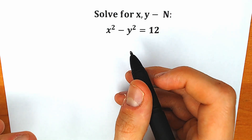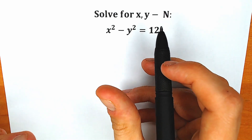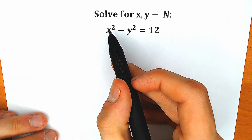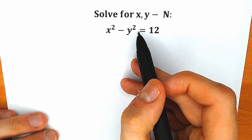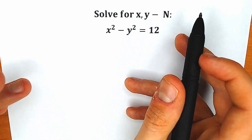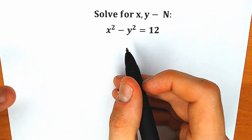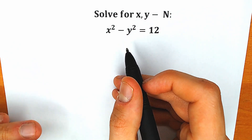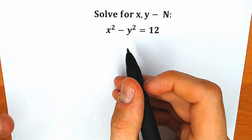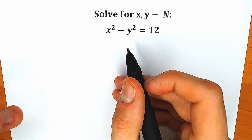Hello everyone, welcome back to my channel Higher Mathematics. Today we have a very interesting Olympiad question. We have x squared minus y squared equal to 12, and we need to find x and y. You can pause the video and write your solution down into the comment section and we will check our answers here in a few minutes.